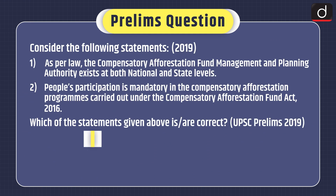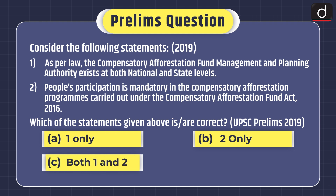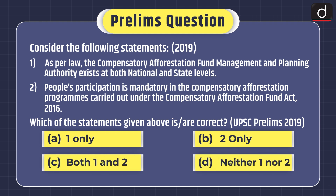Now for practice questions. Prelims-based question: consider the following statements. 1. As per law, the Compensatory Afforestation Fund Management and Planning Authority exists at both national and state levels. 2. People's participation is mandatory in the compensatory afforestation programs carried out under the Compensatory Afforestation Fund Act, 2016. Which of the statements given above is or are correct? (a) 1 only, (b) 2 only, (c) both 1 and 2, or (d) neither 1 nor 2.